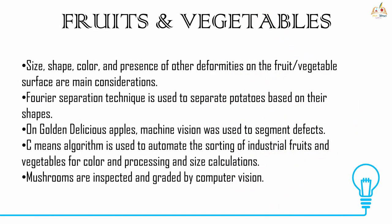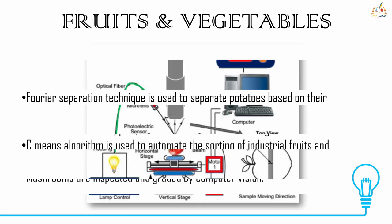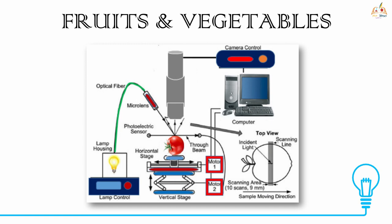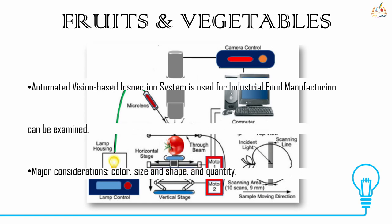Fruits and Vegetables: size, shape, color, and presence of deformities on the fruit and vegetable surface are the main considerations. Fourier separation technique is used to separate potatoes based on their shapes. On golden delicious apples, machine vision is used for analysis. In industries, for automatic sorting of fruits and vegetables for color and size, the C-means algorithm is used. Mushrooms are inspected and graded by computer vision.